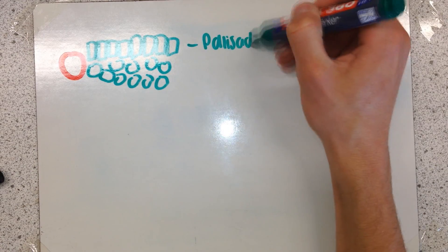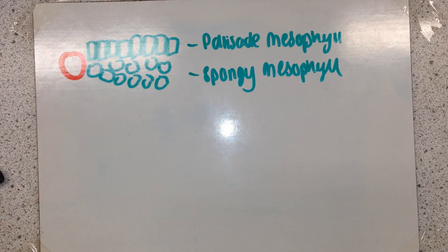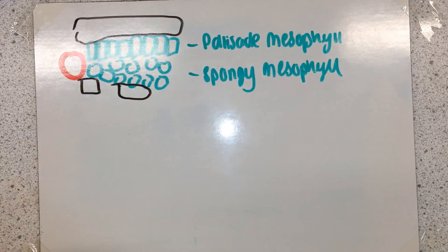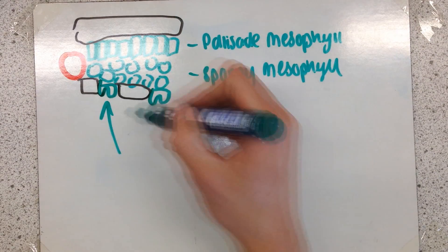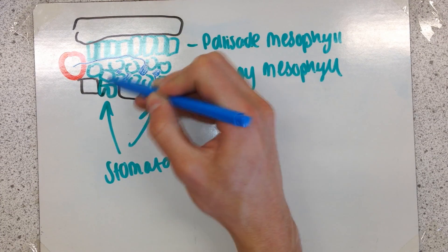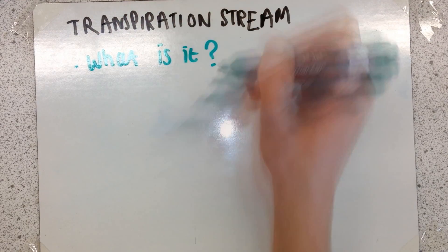Back to this diagram again. You have your palisade mesophyll cells and your spongy mesophyll cells, upper epidermis and lower epidermis, and stomata. Using this diagram you can now see how water leaves from the xylem and leaves the leaf. I'm going to talk about what a transpiration stream is.